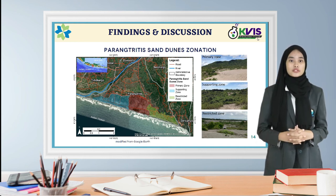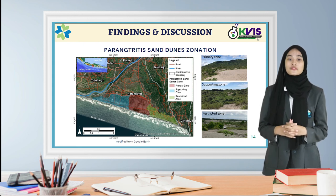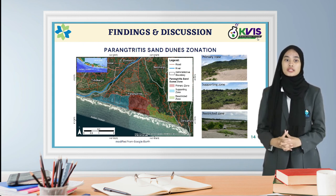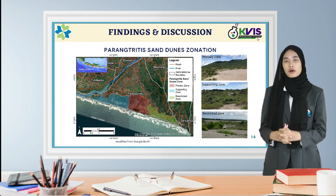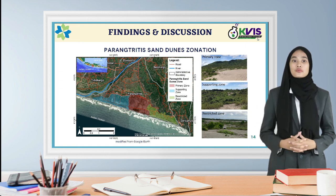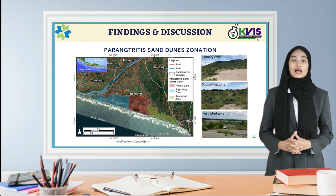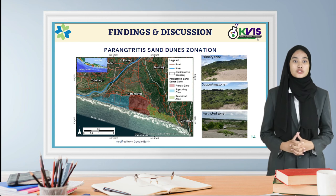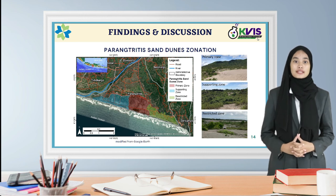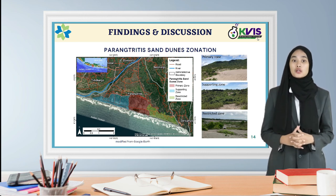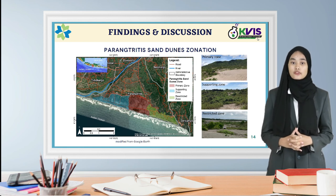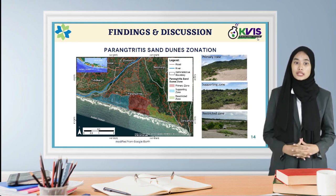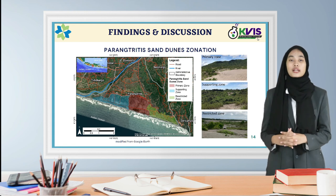Firstly, the primary zone. This is where the wind actively transports the sand to form a parabolic shape. In this area, local vegetation can grow as biodiversity to help form the parabolic shape. Secondly, the restricted zone. In this zone, all anthropogenic activity must be cleared to keep sufficient sand from the marine deposition located in the fore of the sand dune area. The presence of vegetation in several areas in this zone is also needed to reduce the impact of erosion and high tide.